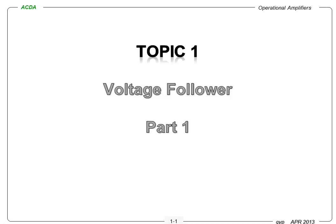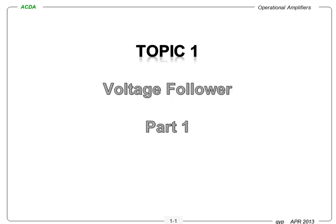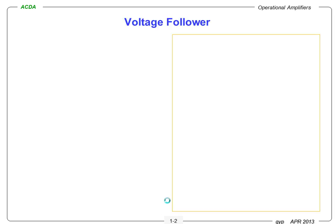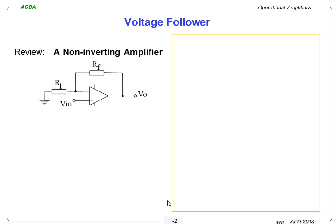Today, let's discuss the voltage follower, which is an op-amp circuit. Remember, we have studied the non-inverting amplifier. The voltage gain of a non-inverting amplifier is AF equals 1 plus RF over R1.